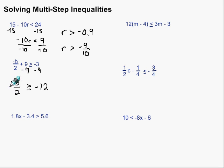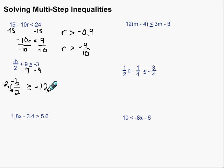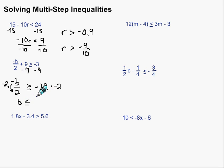Now, in a fraction, if there's a negative, I can write it either on the top number or on the bottom number. I'm going to put it on the bottom number — so I'm calling this a negative 2. I'm going to multiply by negative 2 on both sides. Remember what happens when we multiply by a negative: we're left with just b. We multiplied by negative 2 on both sides, so we need to flip our inequality. Negative 12 times negative 2 is 24, so our answer is b is less than or equal to 24.